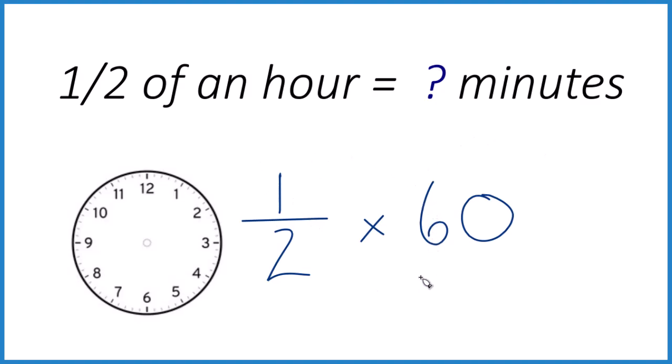So when we multiply, why don't we just call this, instead of 60, let's move it up and we'll call it 60 over 1. 60 divided by 1, still 60, but now the numerators line up and the denominators line up.